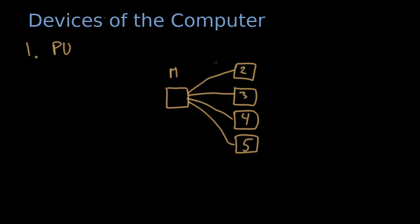So it can issue a computational assignment to this one, to this one, to this one, and to this one, and then wait for all of them to finish. They will accept the message, everybody will do some computation in parallel, and then answer back to the main program, which will then synchronize and accept all of the results.